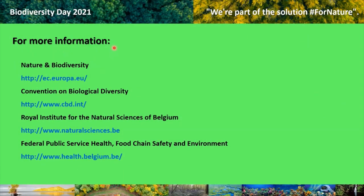If you want to learn more about biodiversity, you can visit these websites: www.ec.europa.eu for nature and biodiversity information; www.cbd.int to learn more about the Convention on Biological Diversity. The Royal Institute for the Natural Sciences of Belgium runs www.naturalsciences.be, and www.health.belgium.be is the website of the Federal Public Service, Health, Food Chain Safety and Environment.